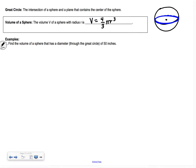Number one: find the volume of a sphere that has a diameter of 50 inches. We have a sphere going across the center with 50 inches. If our diameter is 50, then our radius is 25.